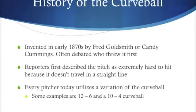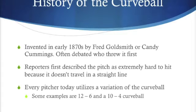Now we're going to talk about the history of the curveball. It was first invented in the early 1870s by Fred Goldsmith or Candy Cummings — it's often debated who threw the pitch first. Reporters back in the day first described the pitch as extremely hard to hit because it simply does not travel in a straight line. Every pitcher today utilizes a variation of the curveball. Adam Wainwright of the St. Louis Cardinals and Gio Gonzalez of the Washington Nationals both throw a different variation — Wainwright uses the 12-to-6 version and Gonzalez the 10-to-4 version.